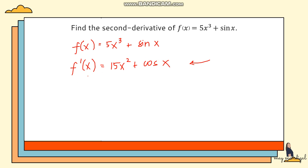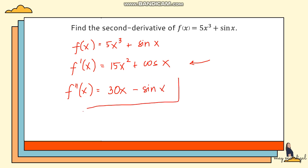Now for the second derivative, we focus on the first derivative and differentiate it again. The derivative of 15x² is 30x, and the derivative of cos(x) is negative sin(x). So the second derivative is f''(x) = 30x − sin(x). To summarize: take the function, get the first derivative, then differentiate again to get the second derivative.